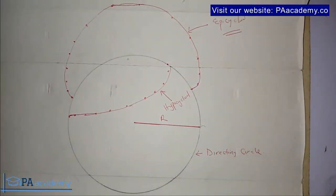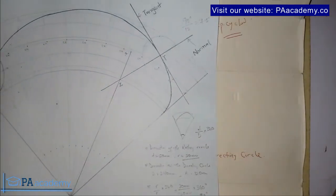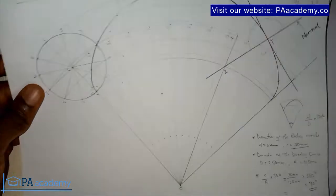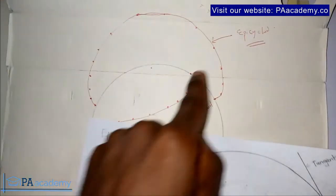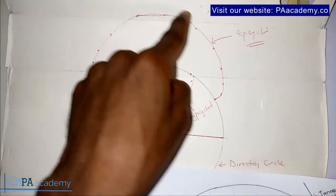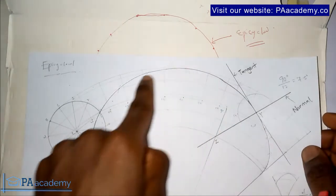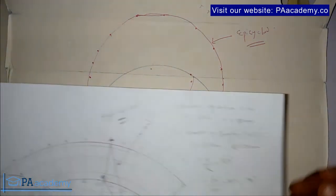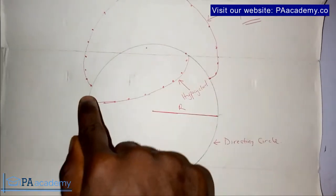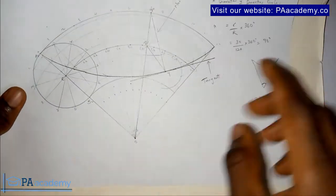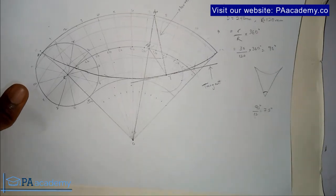Now let's compare with the actual drawings. What I have here is a hypocycloid, and what I have over here is an epicycloid. Let's compare with the explanation I just gave. The epicycloid is the one on the outside — you can see the shape, it comes out like this. And for hypocycloid, see the curve I sketched earlier in terms of definition — you can see the thin curve like this. Looking at the drawing, it is a curve like this. Epicycloid and hypocycloid.